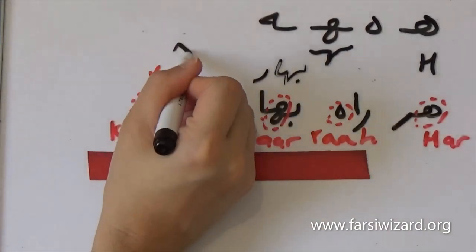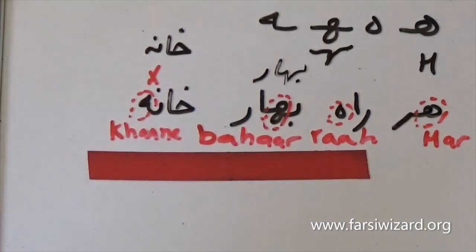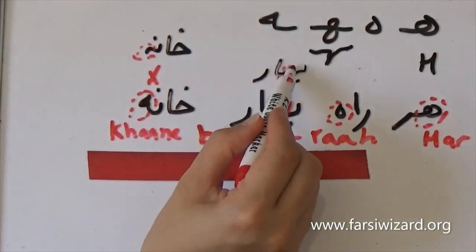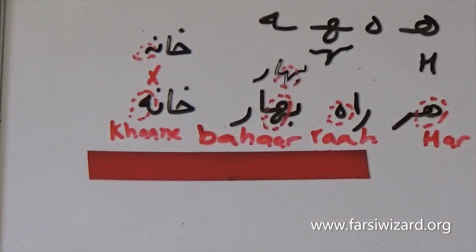Now something that's quite interesting: this version of he can also be written differently. So there are two versions again of he when it appears at the end of a word.